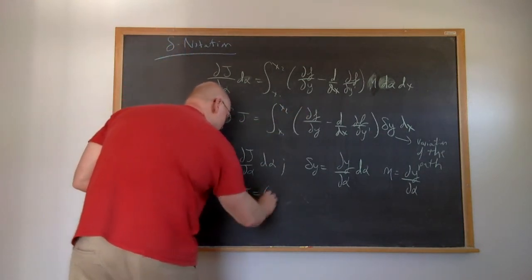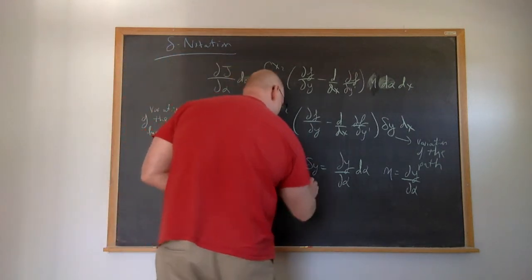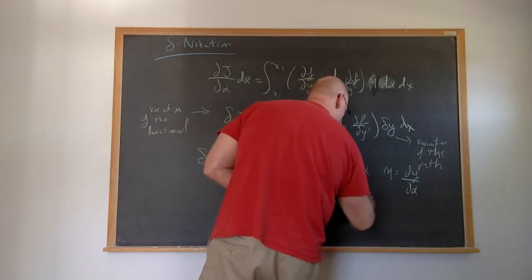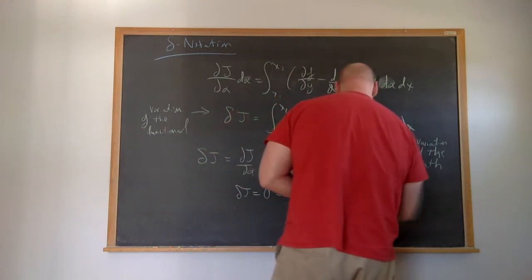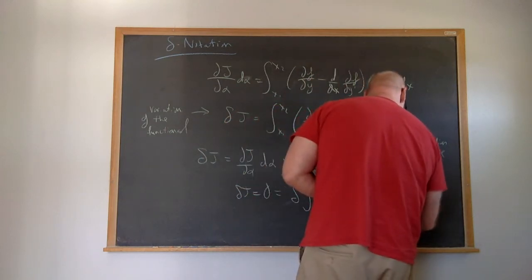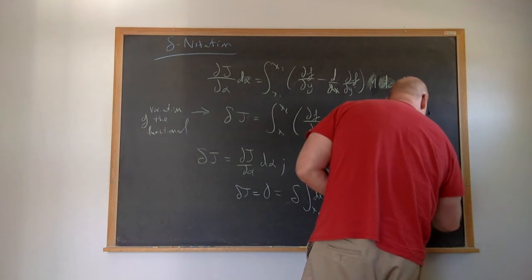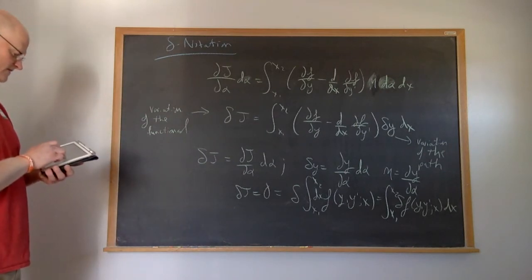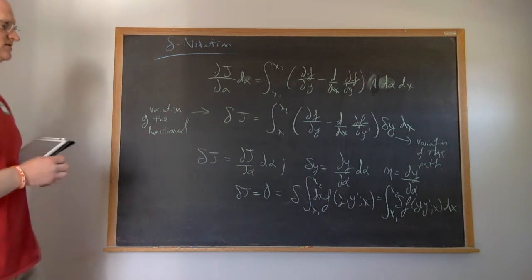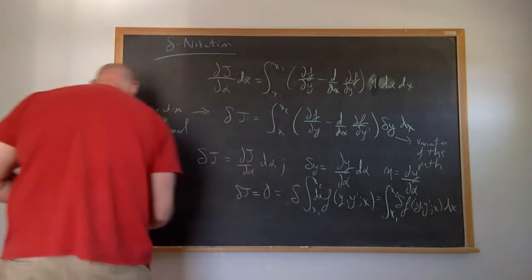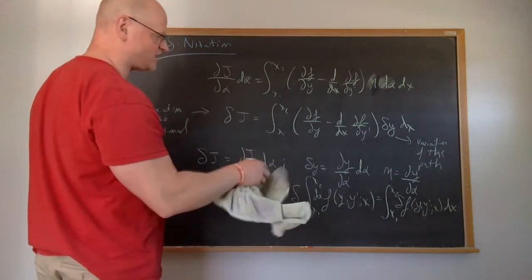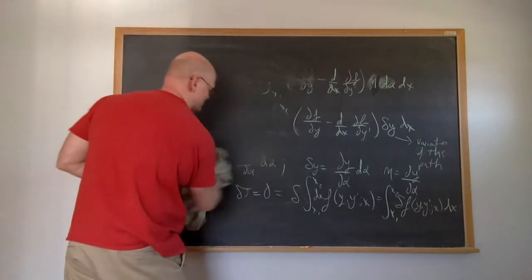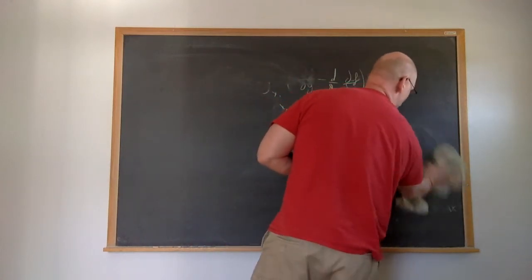We need that the variation must be equal to zero, which is then the same thing as the variation of the integral from x1 to x2 of f of y, y prime, x — which is the same thing as the integral from x1 to x2 of the variation of the function itself, which depends on y, y prime, x, dx. We brought the variation inside because the variation doesn't change the integral and only changes what happens inside, since the integral has to be fixed at those two endpoints.